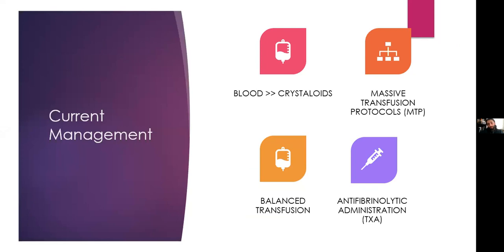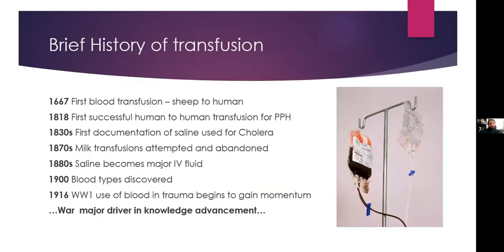Now we'll go over the current management of trauma. We'll start with a brief history of transfusion, which is actually quite interesting. The first documented transfusion ever done was sheep to human — for a young boy who was being bloodlet too much and became anemic. The first successful human-to-human transfusion was performed in an obstetric patient for postpartum hemorrhage, where the husband gave whole blood to the wife at the discretion of the obstetrician.